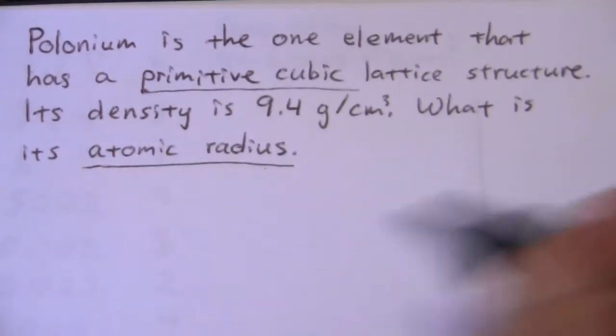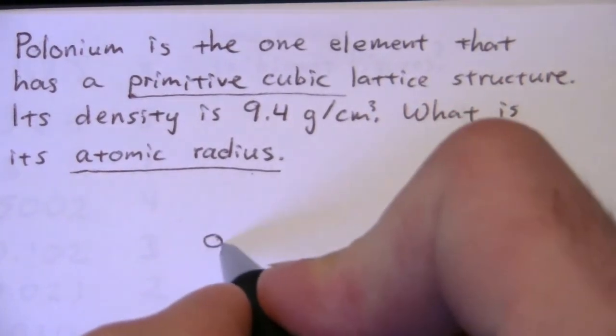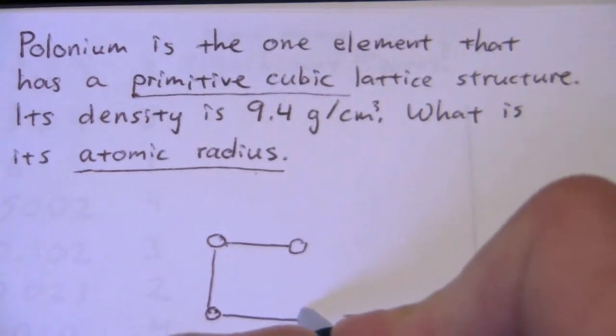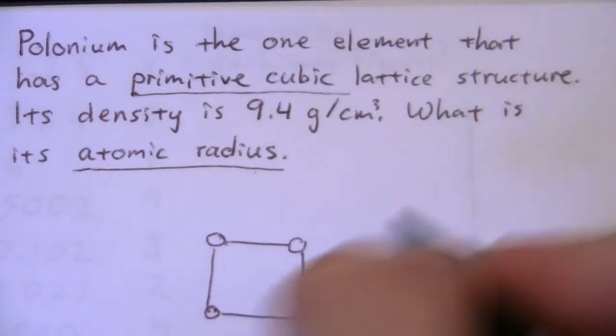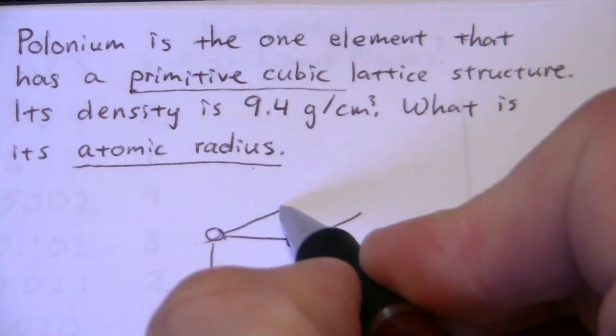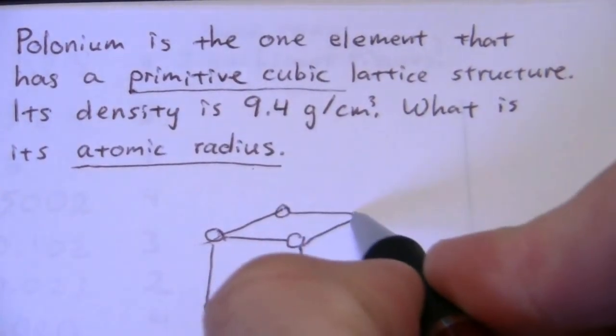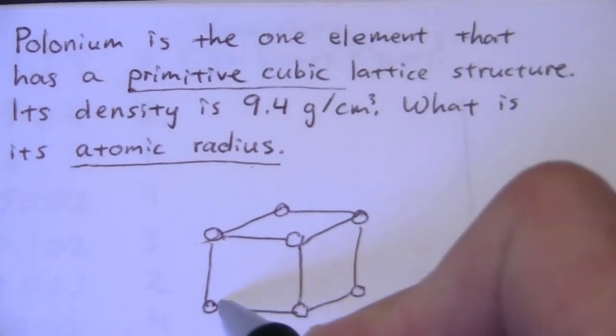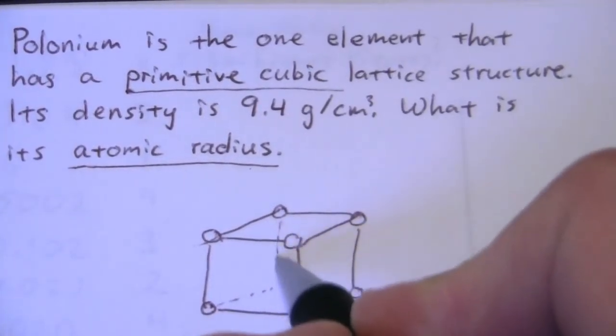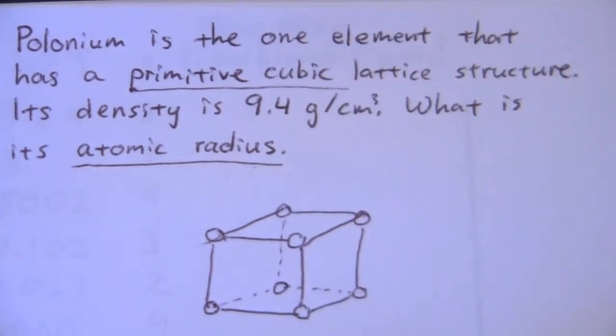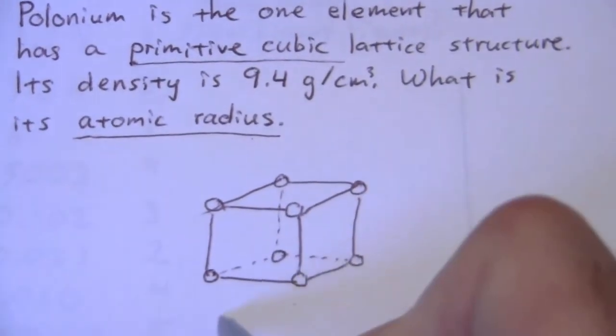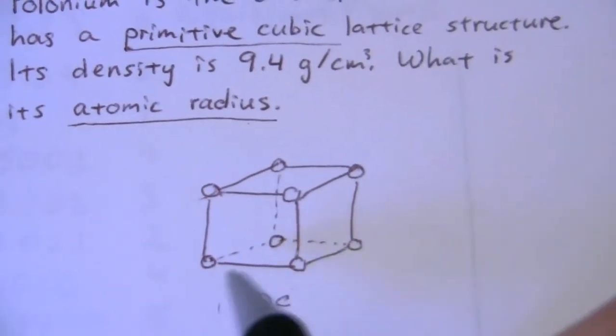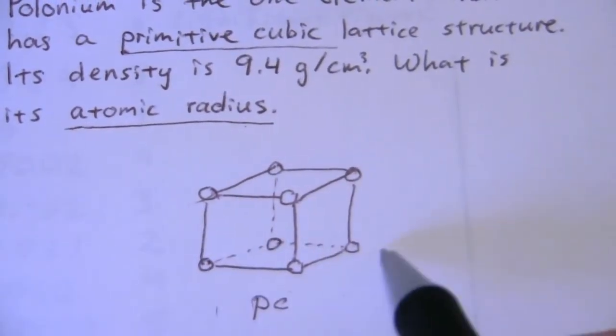What is primitive cubic? That's just the simplest of the cubic lattice structures, where you have an atom of polonium at each of the lattice points along a cube, just a standard cube. You have one in each of the corners of the cube. So this is the primitive cubic, or PC as it is abbreviated, lattice structure, which polonium occupies.